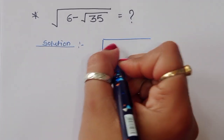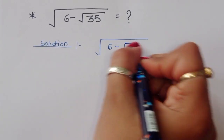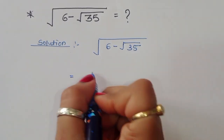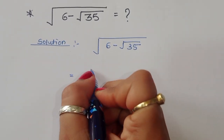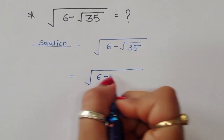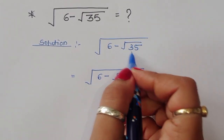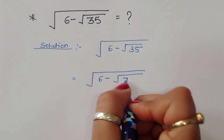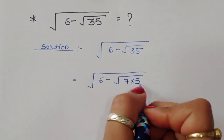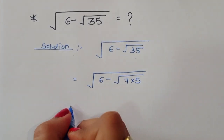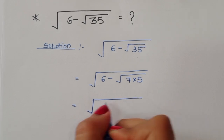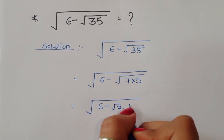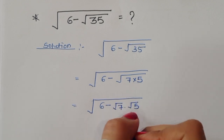√(6 - √35) is our question. We can write 35 as 7 times 5, so √35 = √7 × √5. That is equal to 6 minus √7 times √5, separating this term.